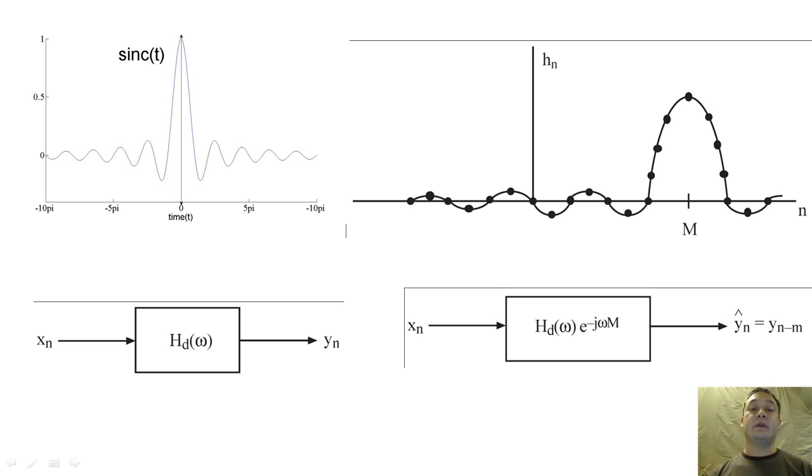We oftentimes create this approximation by shifting our impulse response to the right by M samples so that the sample at n=0 will equal zero. By shifting the impulse response, we can maintain the magnitude of the frequency response, but we add a delay of M samples to the output.